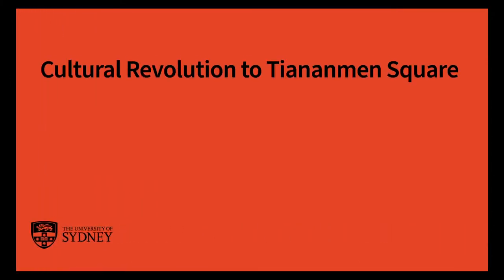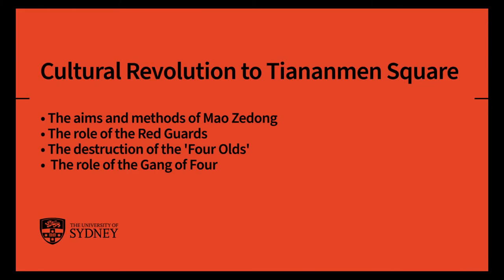Today, as part of the Sophie Talks HSC series, I'm going to be talking about the Cultural Revolution. I'm very happy to see that the Cultural Revolution has made it onto the modern history syllabus for Year 12 HSC students. The key syllabus points I'll cover for the option 'The Cultural Revolution to Tiananmen Square' are the aims and methods of Mao Zedong, the role of the Red Guards, the destruction of the Four Olds, and the role of the Gang of Four. All of these points flow into each other because Mao's ideology and his actions were so closely interrelated.